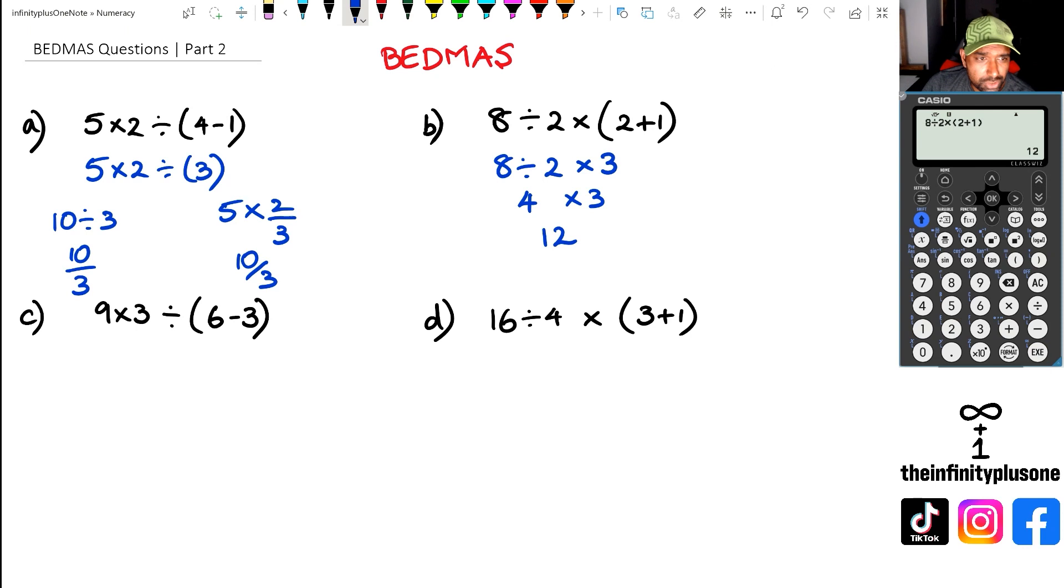Going to question C, C is very similar to what we did at A. So again, we're going to do the brackets first. So we've got 9 times 3 divided by 6 minus 3, which is 3. And again at this point, there's two ways of doing this. You could have done 27 divided by 3, because 9 times 3 is 27.